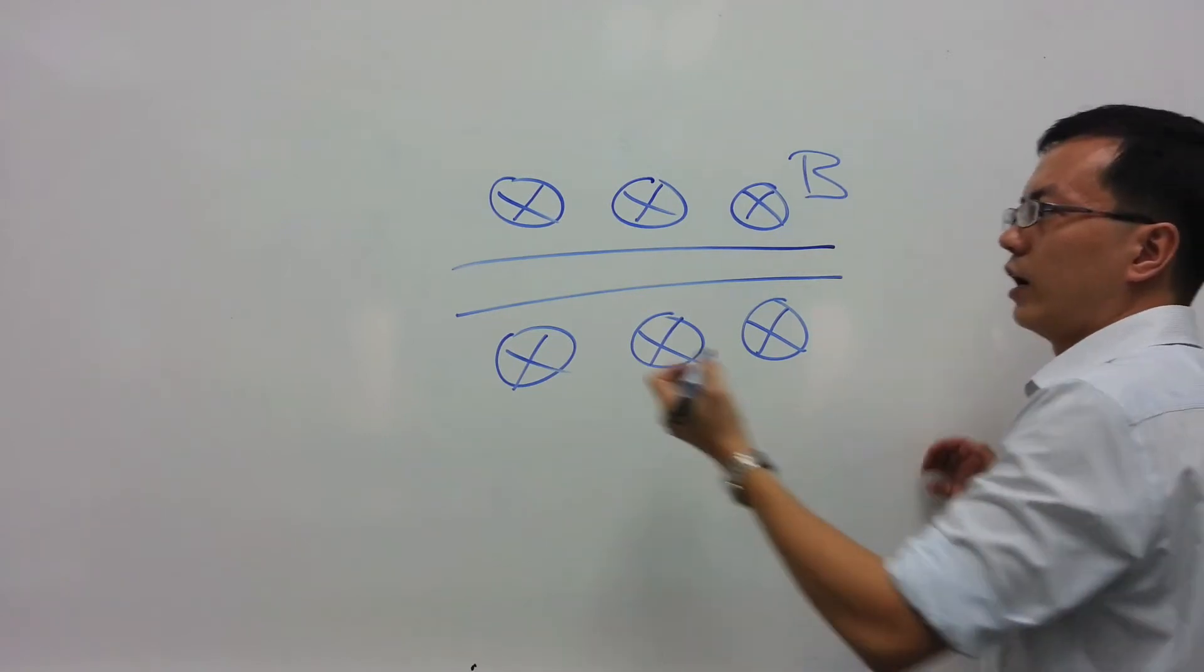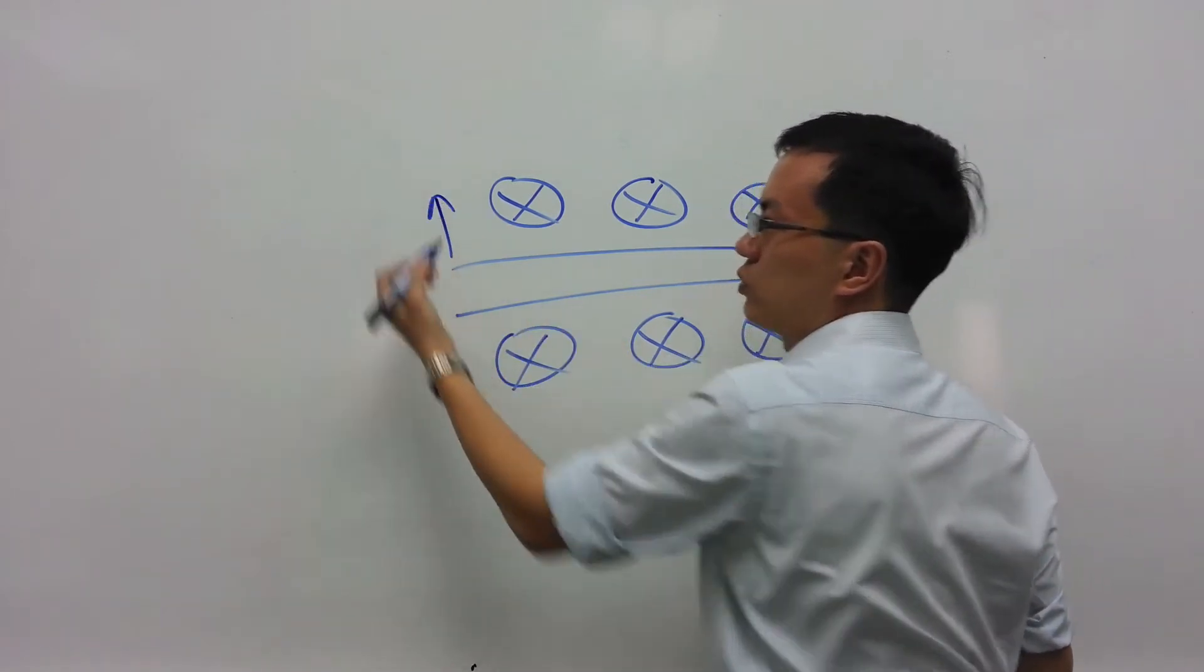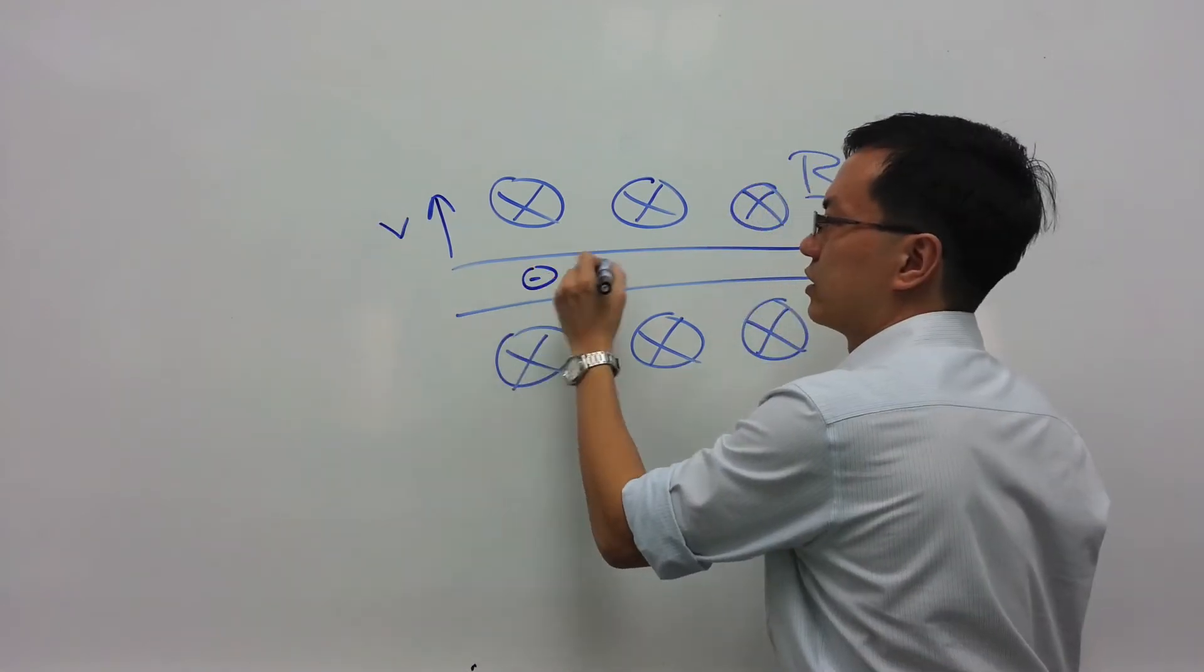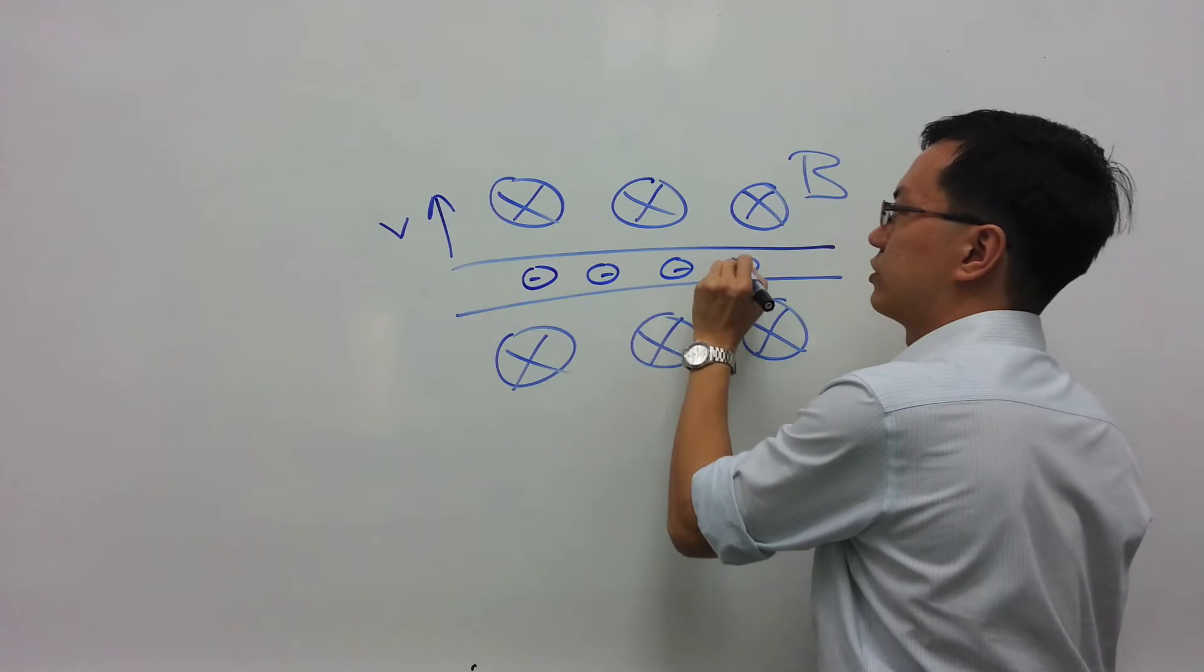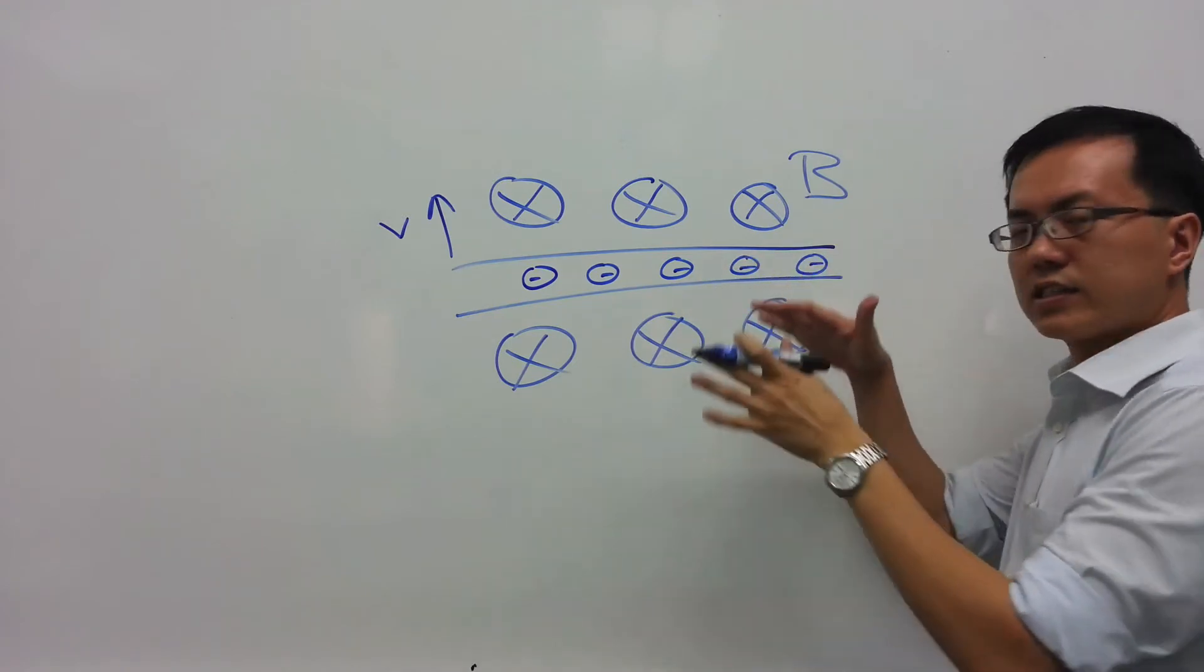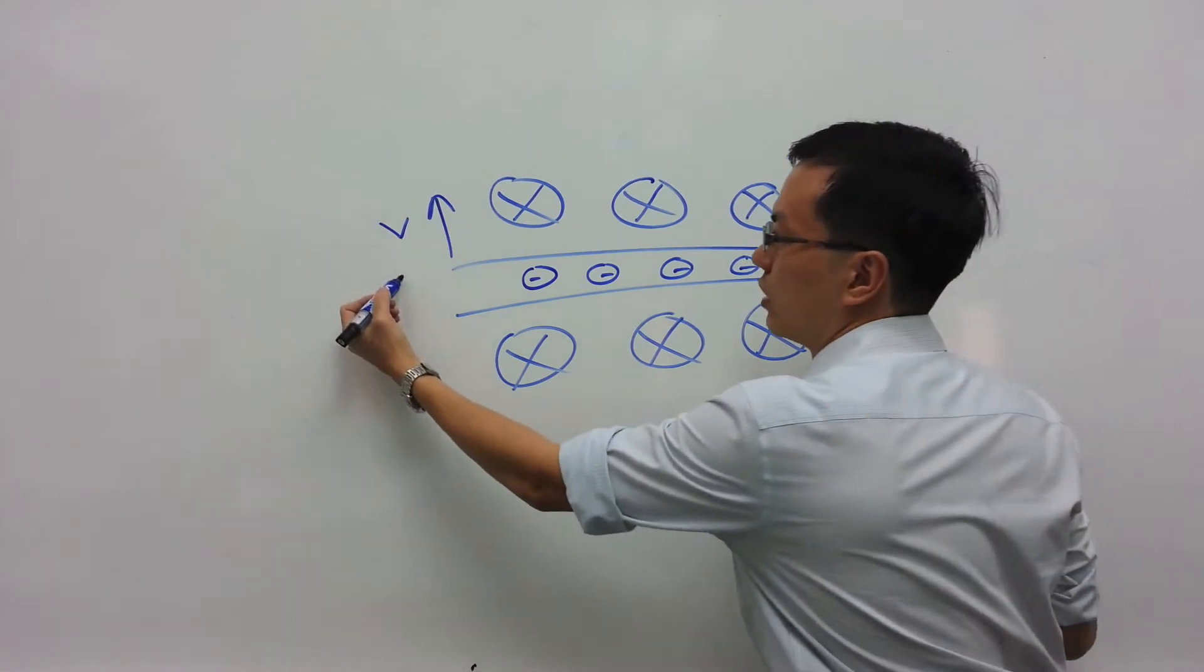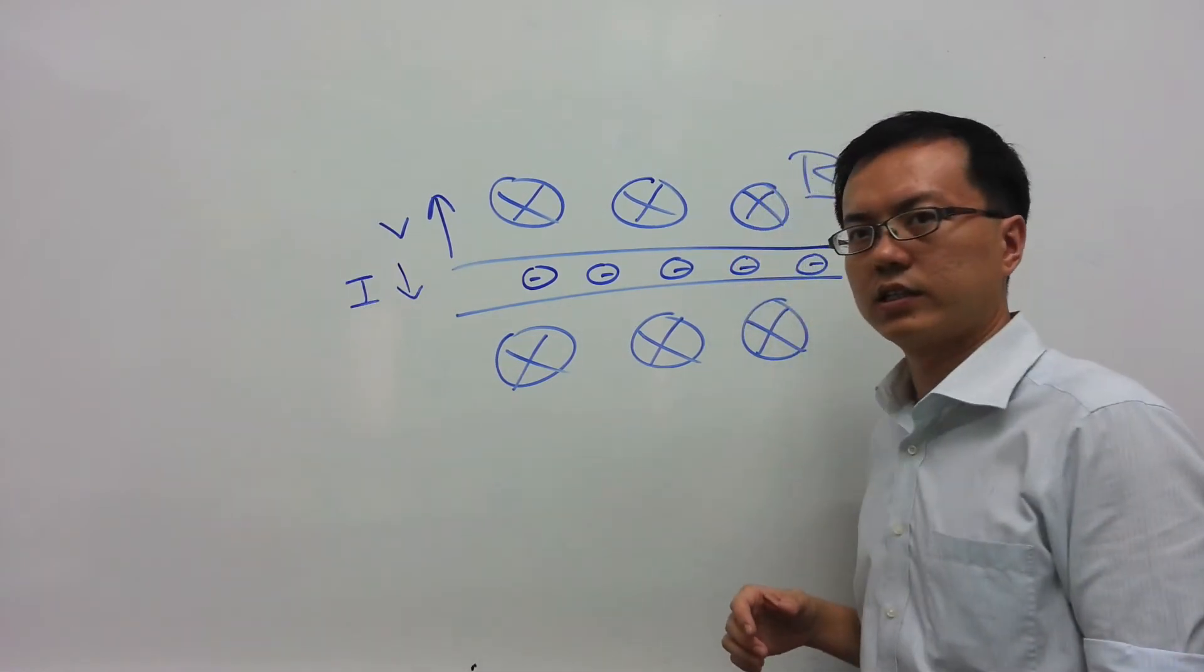And if I were to shift this wire up with a velocity V, this wire actually consists of many free electrons. And as these free electrons move upward, it is as though there is a current flowing downward.